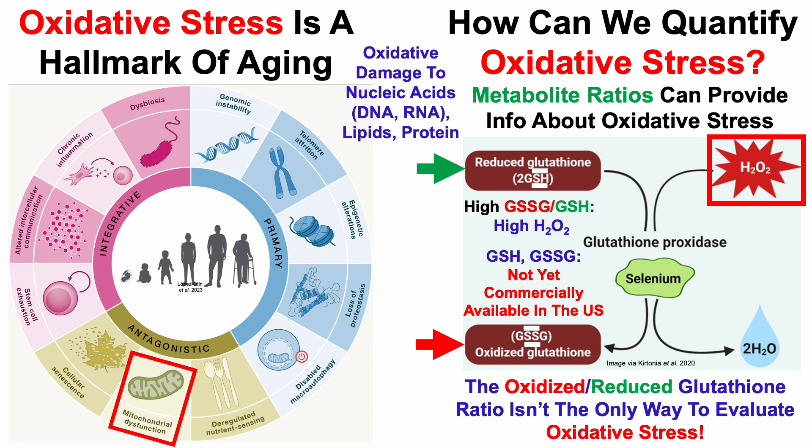So in this video, I'm going to go over two examples: cysteine to cystine, and methionine sulfoxide to methionine.